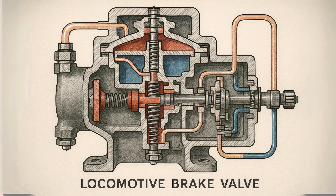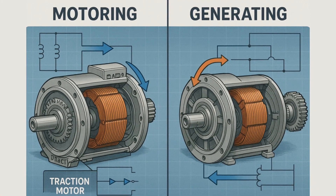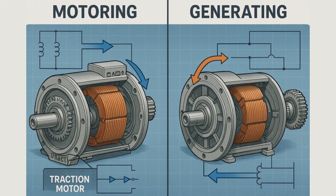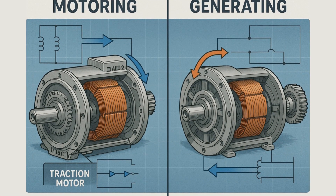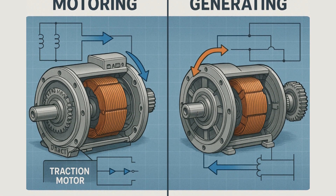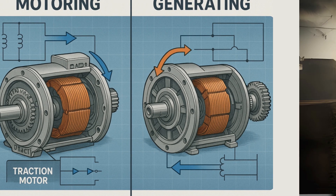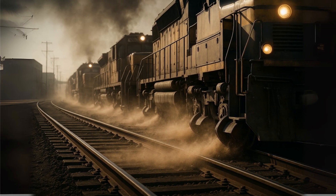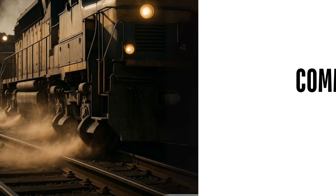Brake control in MU operation involves both pneumatic and dynamic braking systems. The engineer's brake valve in the lead unit creates pressure reductions in the brake pipe, which are sensed by the brake control valves on each locomotive. Dynamic braking is coordinated electronically, with the master unit commanding specific braking effort levels. The traction motors switch to generator mode, with electrical energy either dissipated through resistor grids or fed back into the electrical system in newer regenerative systems.